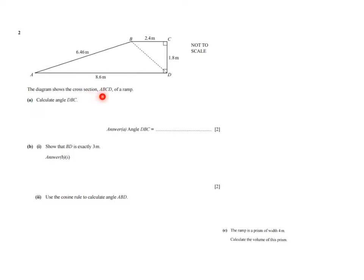The diagram shows the cross-section ABCD of a ramp. So this is some sort of skateboard ramp and then the cross-section of it. Calculate angle DBC for the first question, two points, DBC over there.